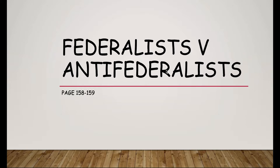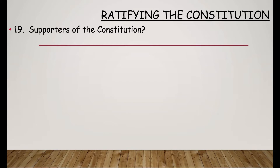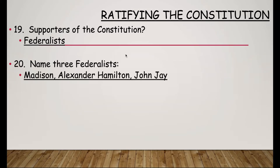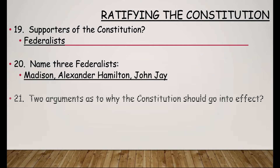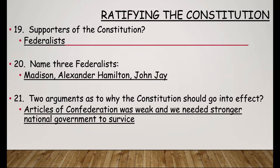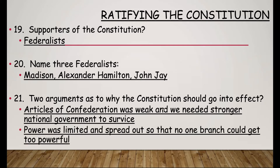This next part deals with people that supported the Constitution and people that did not — known as Federalists or Anti-Federalists. Supporters were known as Federalists. Some of the main Federalists were James Madison, Alexander Hamilton, and John Jay, who argued that states should pass the Constitution. They argued that the Articles of Confederation was weak and they needed a stronger government for the country to survive. They also said that because it had three branches of government, power was spread out so that one branch couldn't get too powerful — they could check and watch over the other branches.